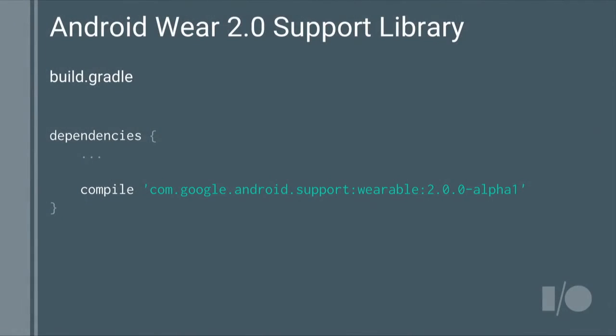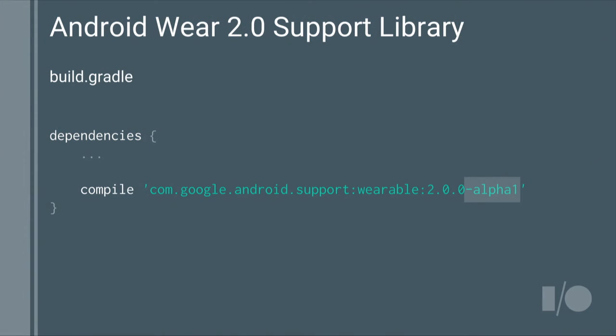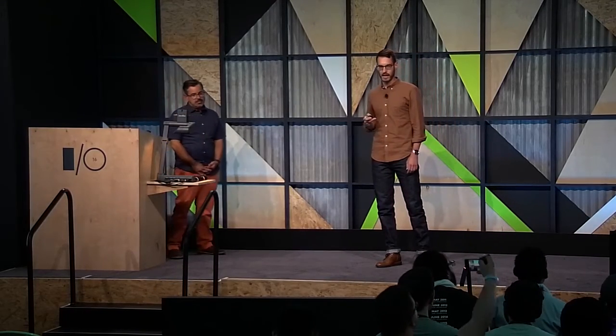Android Wear 2.0 has a new wearable support library that includes all the components discussed today and more. To get this library, add a dependency to the wearable support library in your Gradle build file. The Gradle file currently depends on the developer preview version using the suffix alpha 1; the exact dependency will change throughout the preview period and will finally settle on 2.0.0. To find the exact dependency, please visit the Wear developer site, where you can also find guides, tutorials, and reference. The guidelines spoken about today are available on the Material Design for Wear spec site.